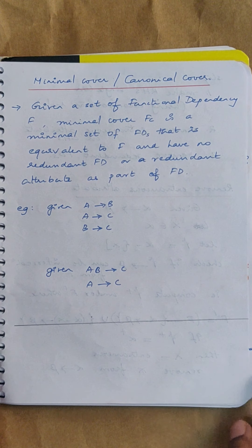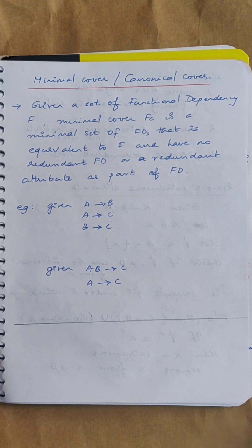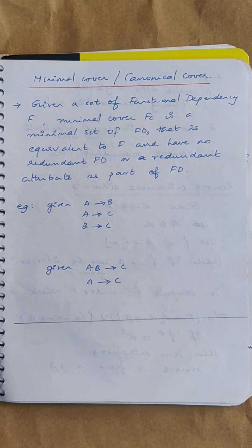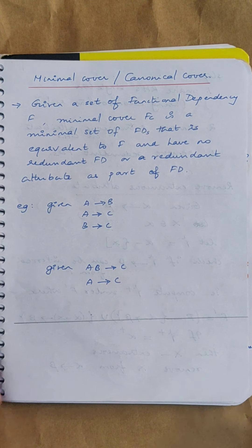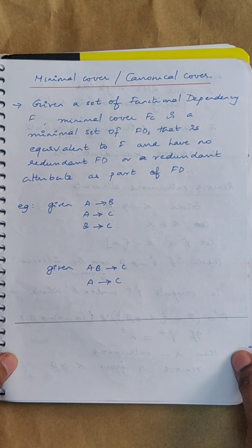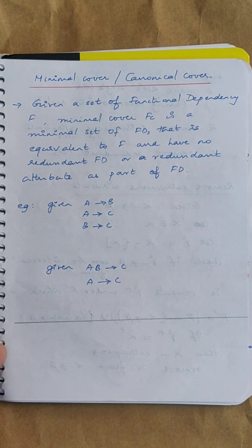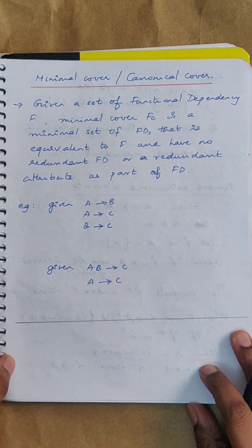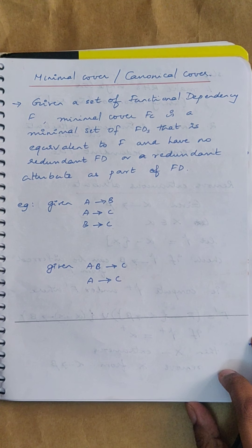Hello guys, my name is Arshana Devi. I am an assistant professor from Rajagiri School of Engineering. This video lecture is from the subject Principles of Database Design, Module 4, as part of RSET Online. The topic is how to find the minimal cover, also termed as canonical cover, given a set of functional dependencies.